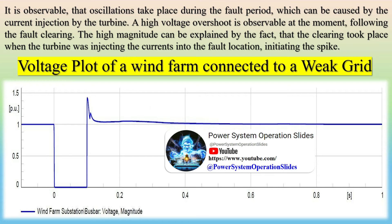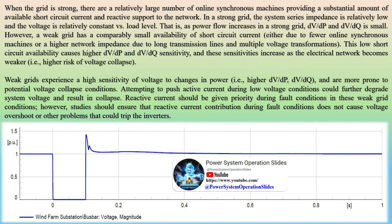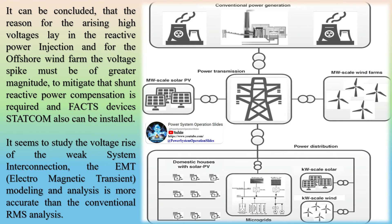When the grid is strong, there are a relatively large number of online synchronous machines providing substantial short-circuit current and reactive support to the network. In a strong grid, the system's series impedance is relatively low and voltage is relatively constant versus load level — meaning DV/DP and DV/DQ are small as power flow increases. However, a weak grid has comparably small availability of short-circuit current due to fewer online synchronous machines or higher network impedance from long transmission lines and multiple voltage transformations. This low short-circuit availability causes higher DV/DP and DV/DQ sensitivity, and these sensitivities increase as the electrical network becomes weaker, raising the risk of voltage collapse.